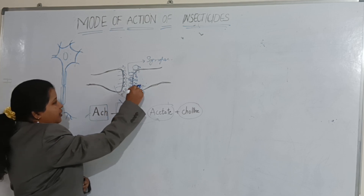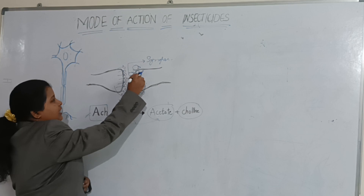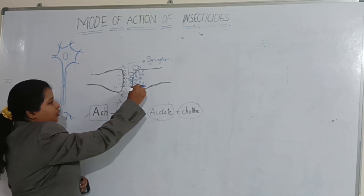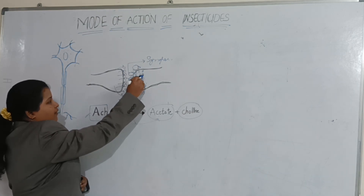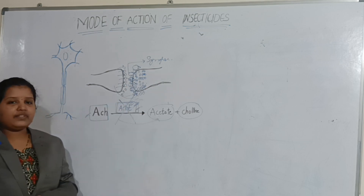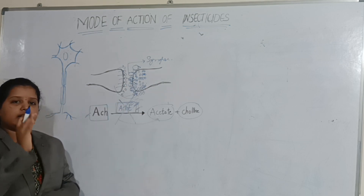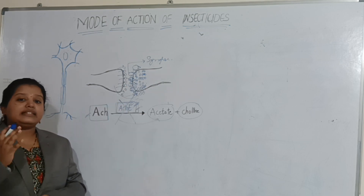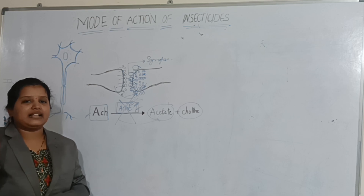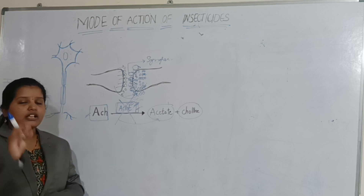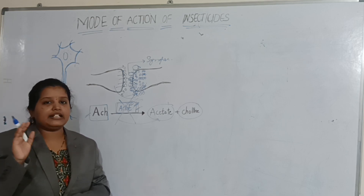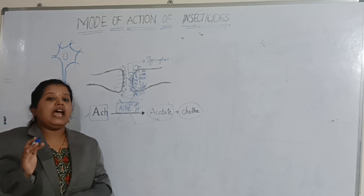As a result, there will be continuous accumulation of messages or signals in the other neuron — continuous accumulation of acetylcholine in the other neuron. Due to this continuous accumulation of acetylcholine, the insect will die due to paralysis. This is the general function of acetylcholinesterase inhibitors.